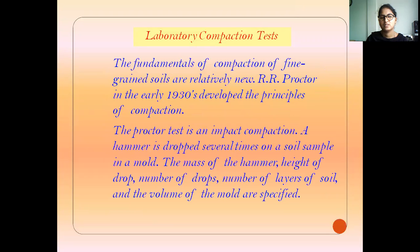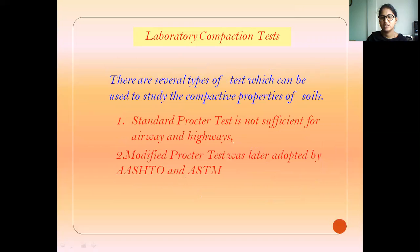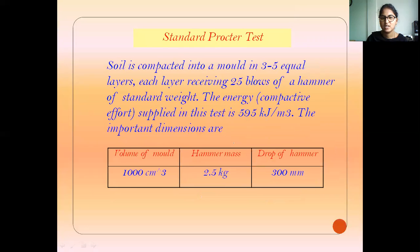In the Proctor compaction test, the mass of the hammer, height of drop, number of blows, number of layers, and volume of mold are specified. There are two tests: the standard compaction test and the modified compaction test.